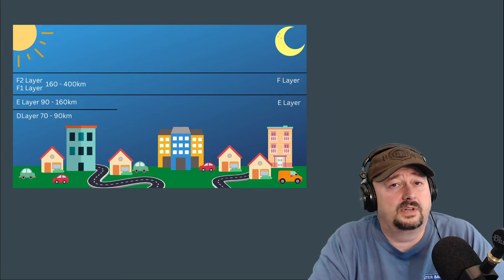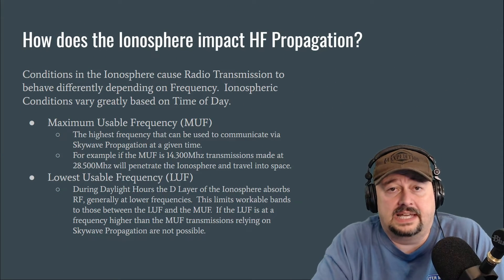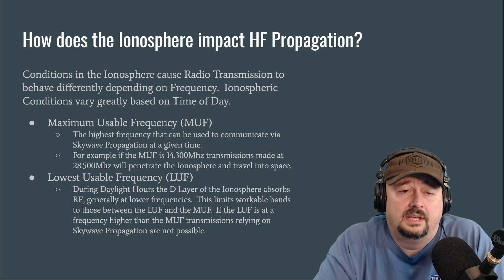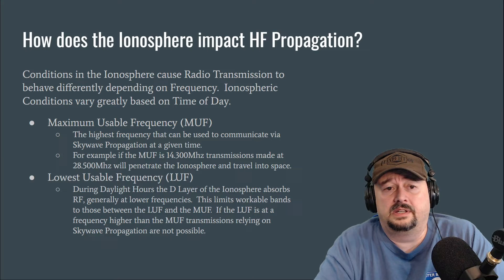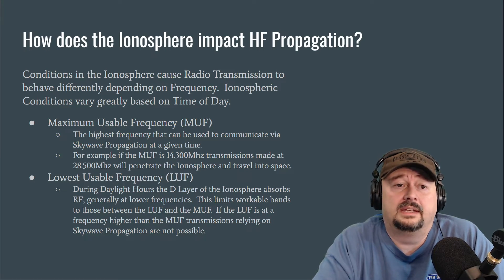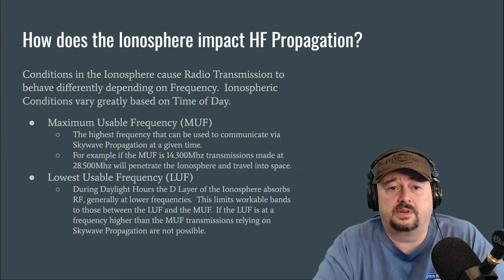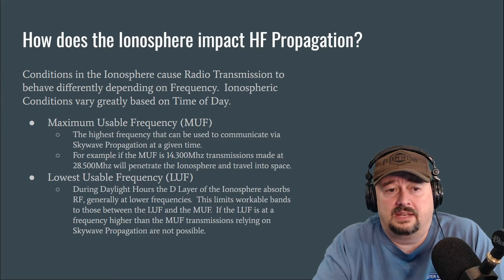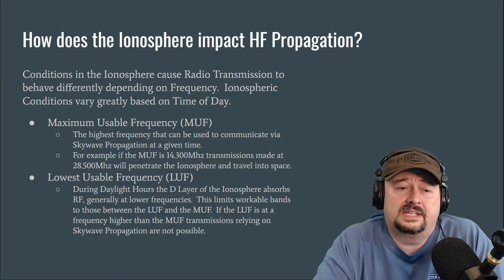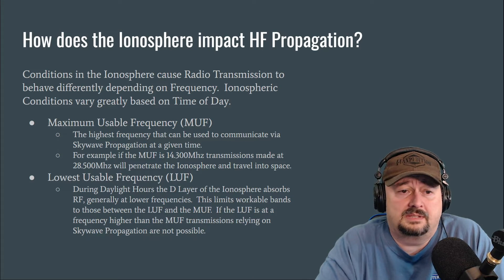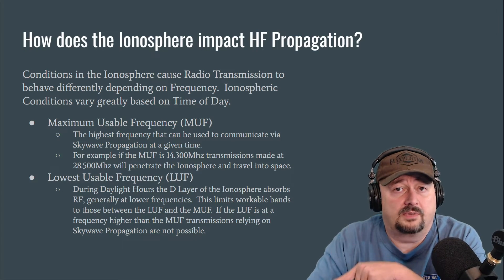The D-layer really impacts our ability to use skywave propagation. Conditions in the ionosphere cause radio transmissions to behave differently depending on frequency, ionosphere conditions, and time of day. One important concept is the MUF — the maximum usable frequency — the highest frequency that can be used to communicate via skywave propagation at a given time. For example, if the MUF is 14.3 megahertz, transmissions at 28.5 megahertz in the 10-meter band will penetrate the ionosphere and go straight into space rather than refracting back down.